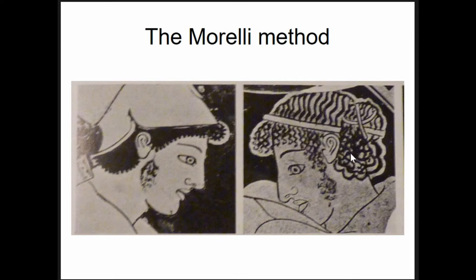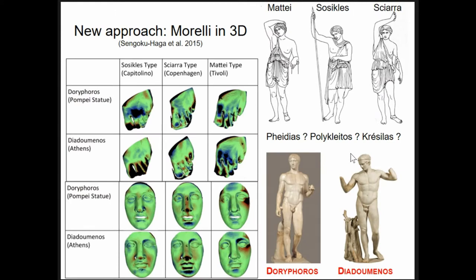This worked fine for more than 50 years in Greek vase painting, but there were only sporadic attempts to apply this to 3D sculpture — obviously because photographic methods used to record sculptures also distort some details. If you take two different pictures under different lighting conditions or with different cameras from the same object, the resulting pictures can be quite different. So with normal photographs it doesn't work in 3D. A few years ago a Japanese team started comparing 3D details after scanning certain pieces of sculpture.